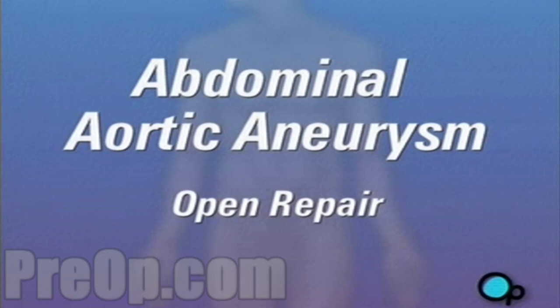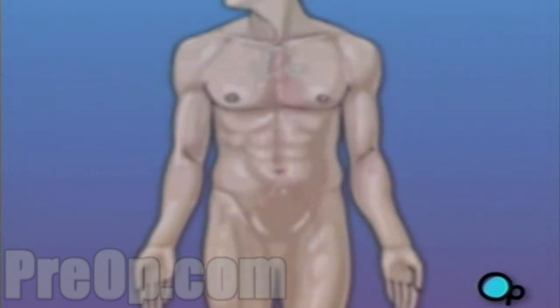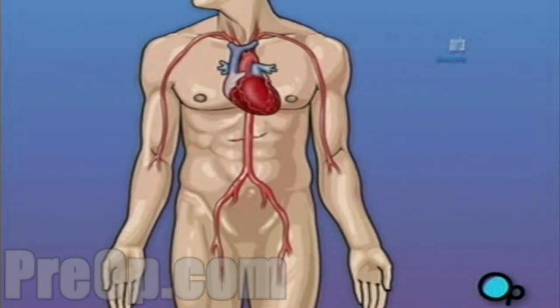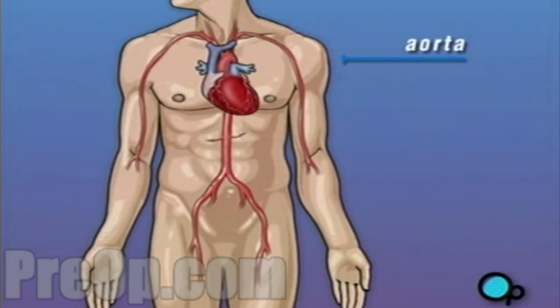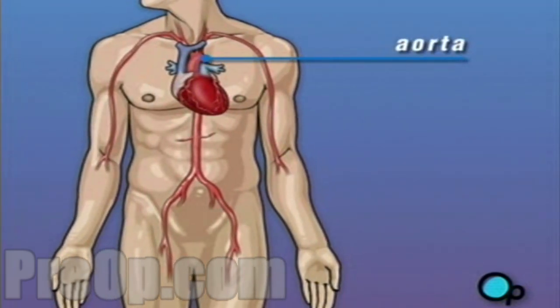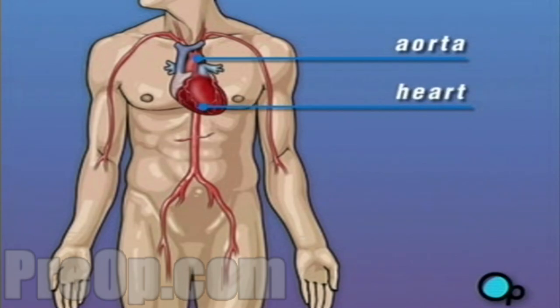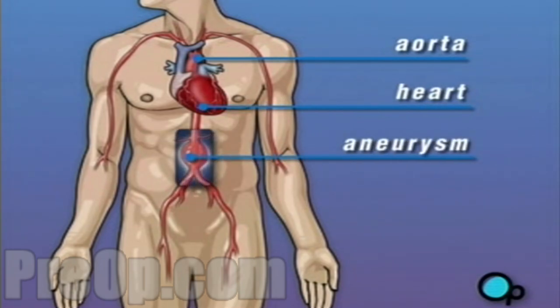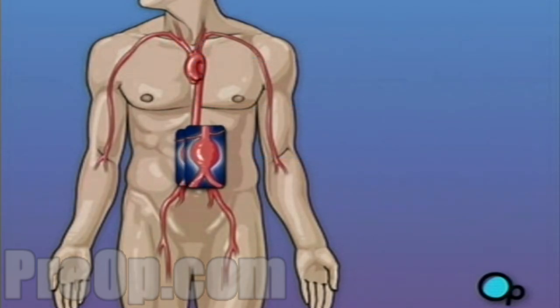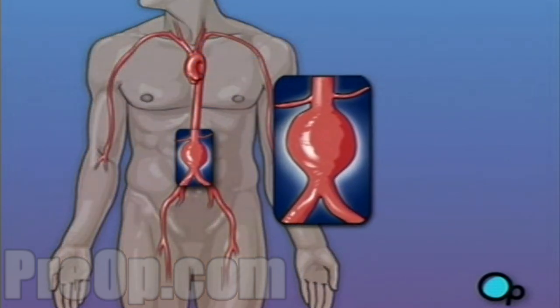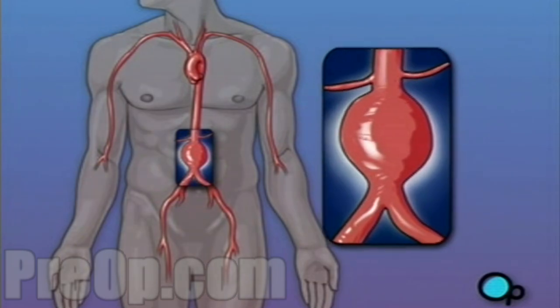Your doctor has recommended that you have surgery to treat an abdominal aortic aneurysm. The aorta is the main blood vessel that carries oxygen-rich blood from your heart to the organs in your body. An aneurysm is a bulge or swelling in a blood vessel. This type of bulge occurs when a blood clot develops in the aorta, causing it to expand.